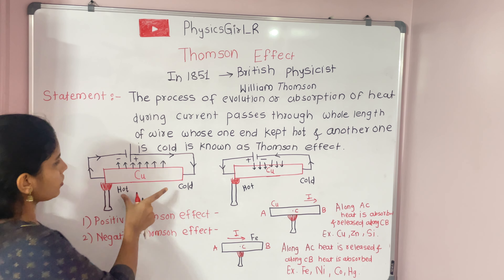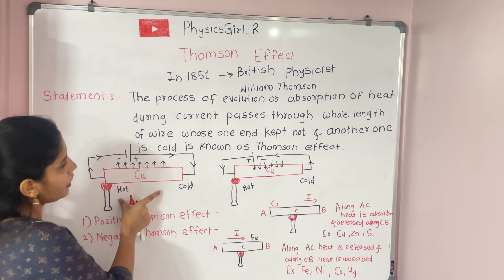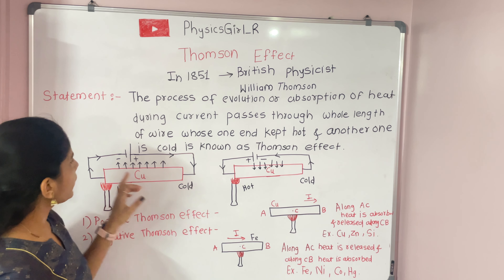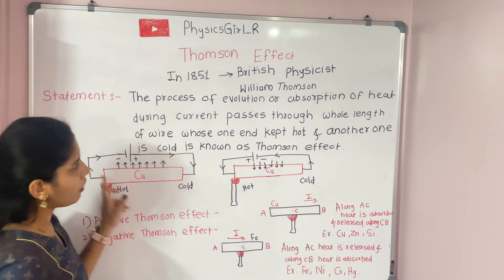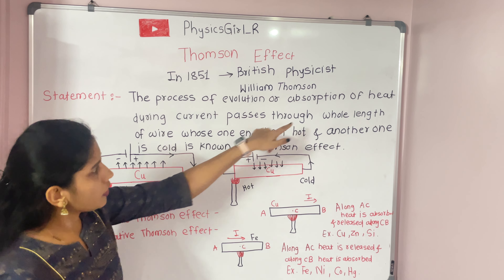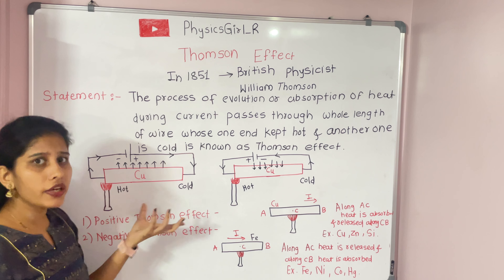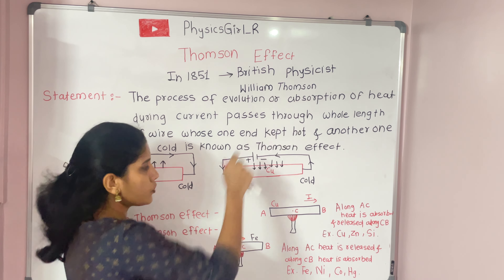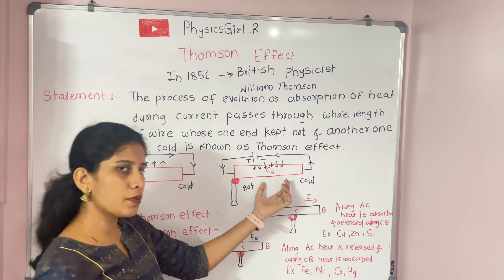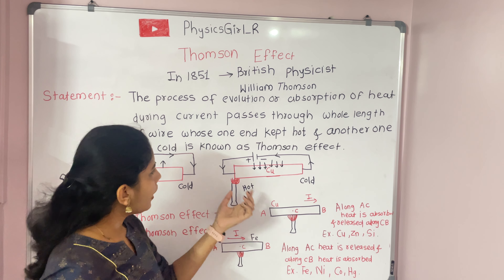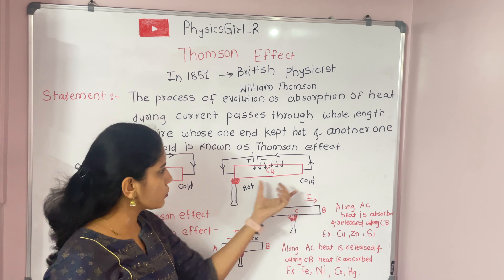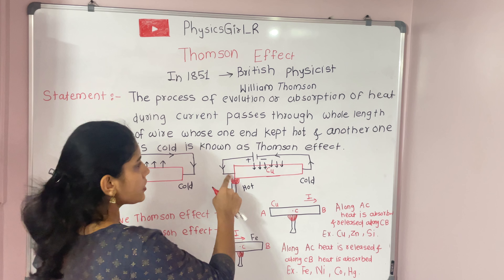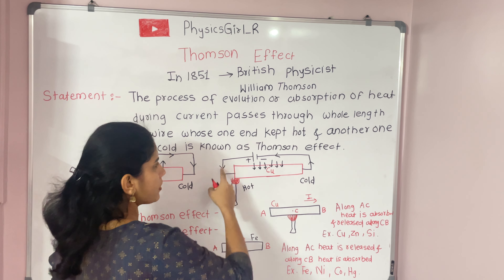This is the evolution of heat during the current passing through the whole length of the conducting wire. So throughout the whole length of this copper wire there is evolution of heat when current flows. Now for the second case — consider the same copper wire with one end hot and one end cold, so there is a temperature difference between the two ends.